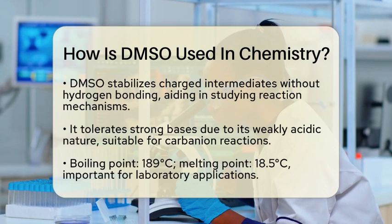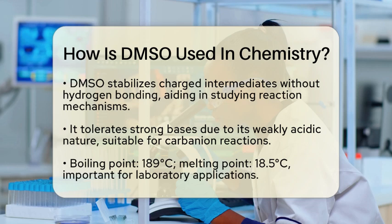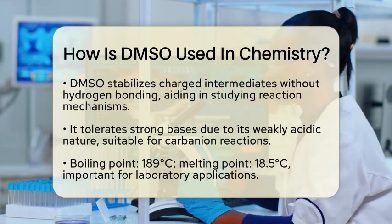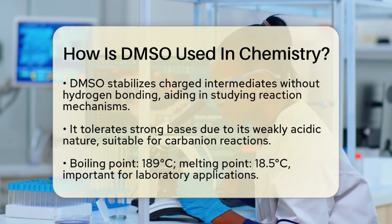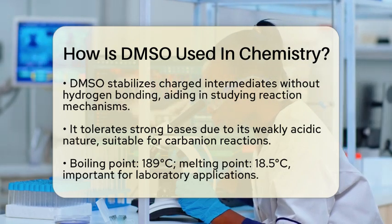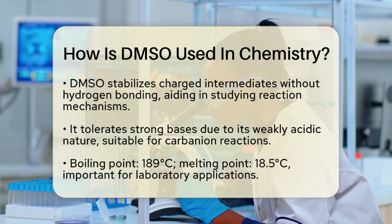DMSO can tolerate relatively strong bases due to its weakly acidic nature. This makes it suitable for reactions involving carbanions and other reactive species. Its high boiling point of 189 degrees Celsius and melting point of around 18.5 degrees Celsius also play a role in its laboratory applications.